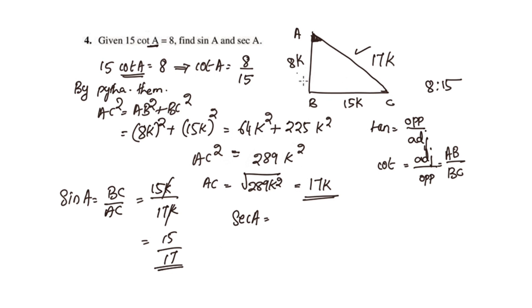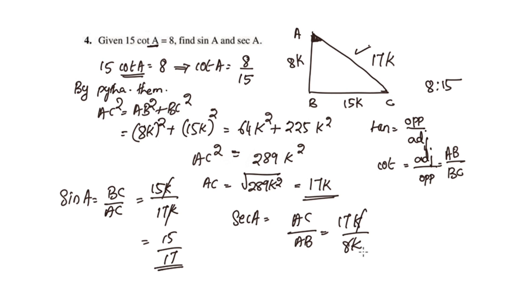Cos A is adjacent by hypotenuse. So sec A, the reciprocal, is hypotenuse by adjacent, that is AC by AB, equal to 17K by 8K. K and K cancel, giving sec A equals 17 by 8.